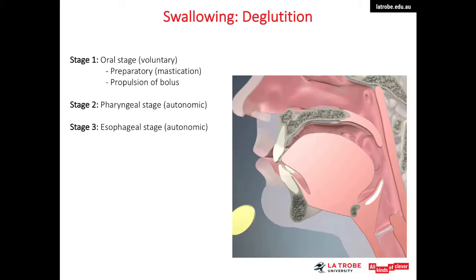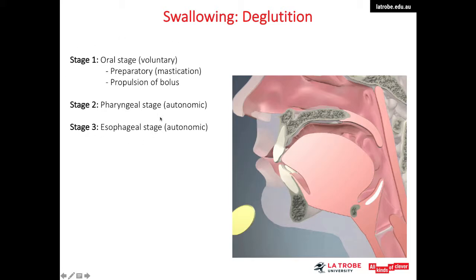Now let's look at the sophisticated mechanism of swallowing, also known as deglutition. There are three stages: the oral stage, the pharyngeal stage, and the esophageal stage. The oral stage is a voluntary process we can control, whereas the pharyngeal and esophageal stages are autonomic. Let's watch a clip and focus on the anatomical structures that move during this activity.